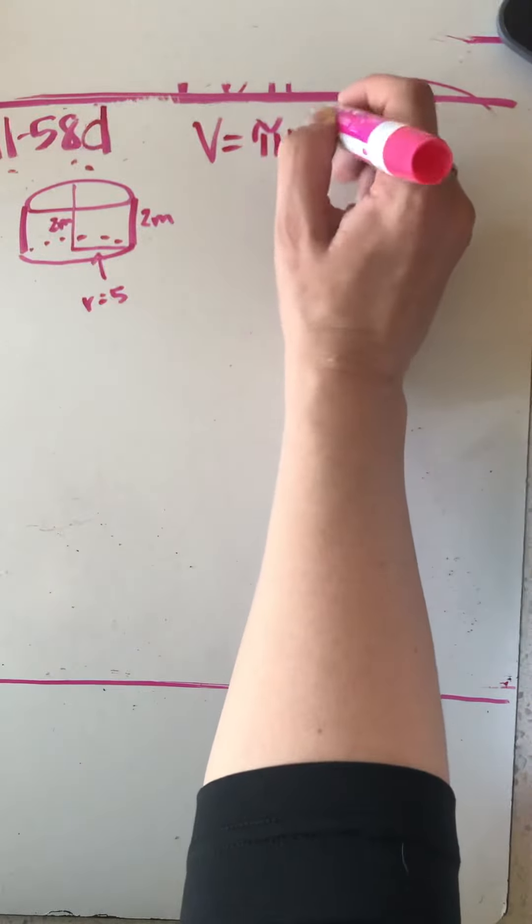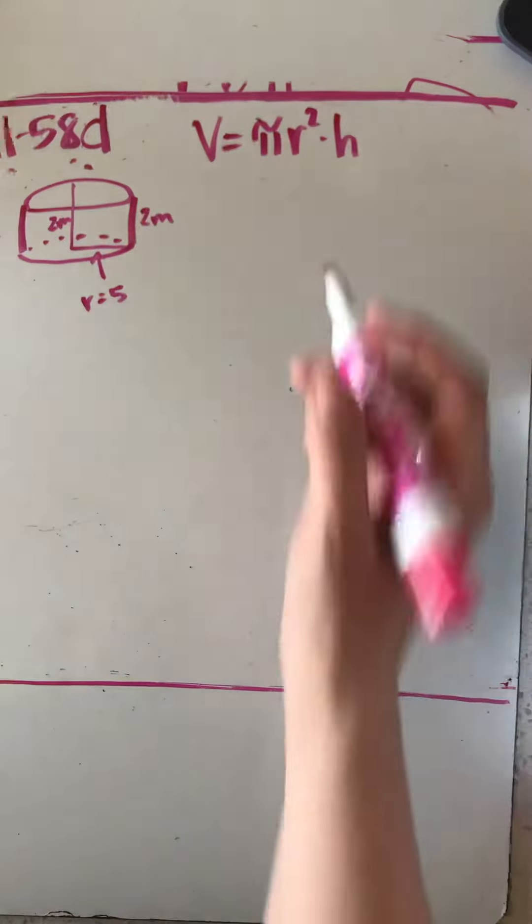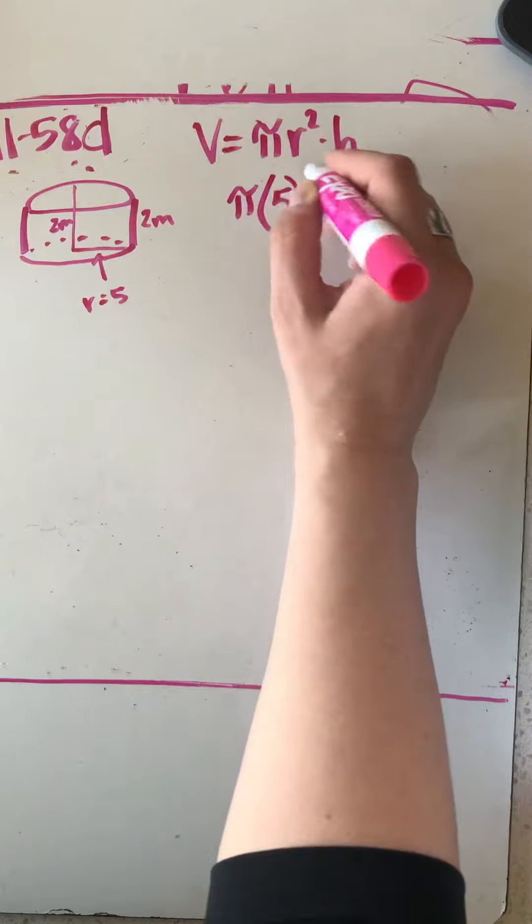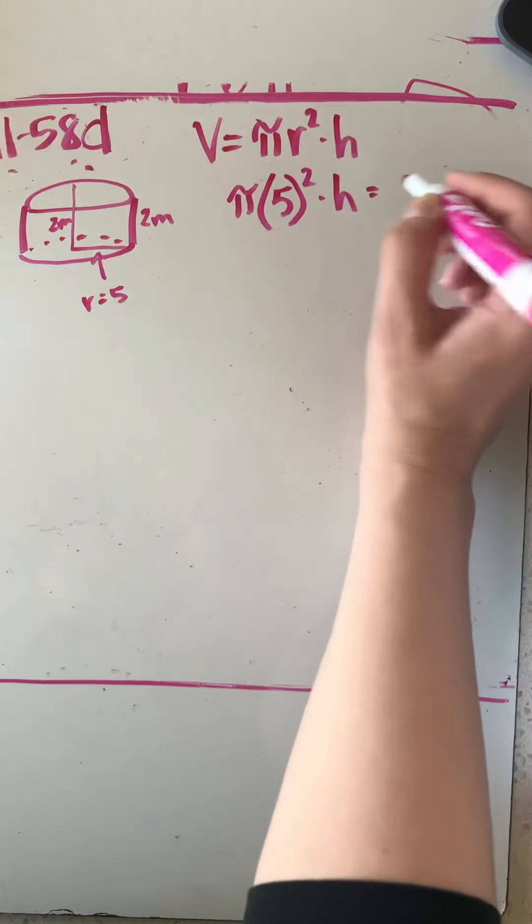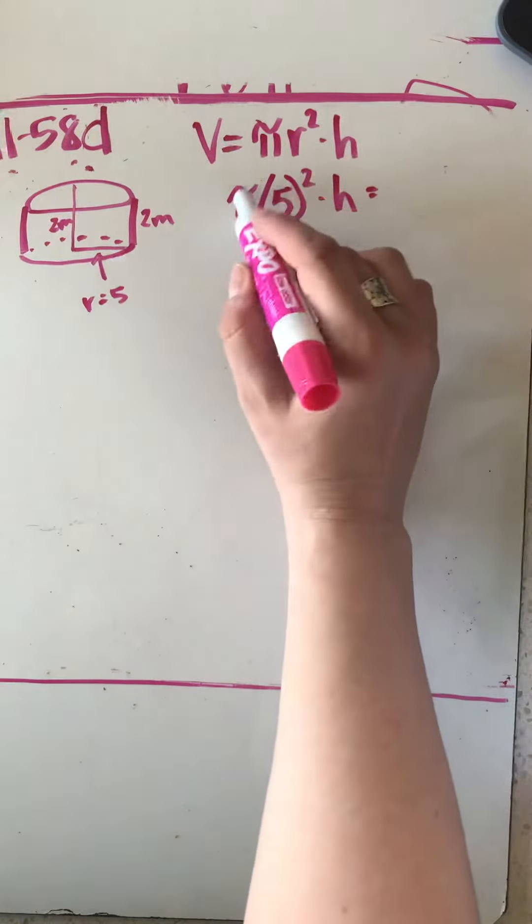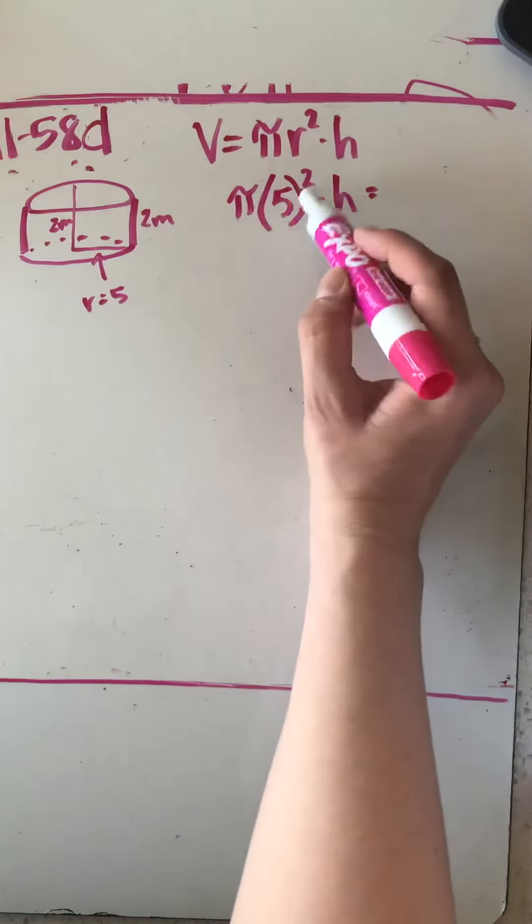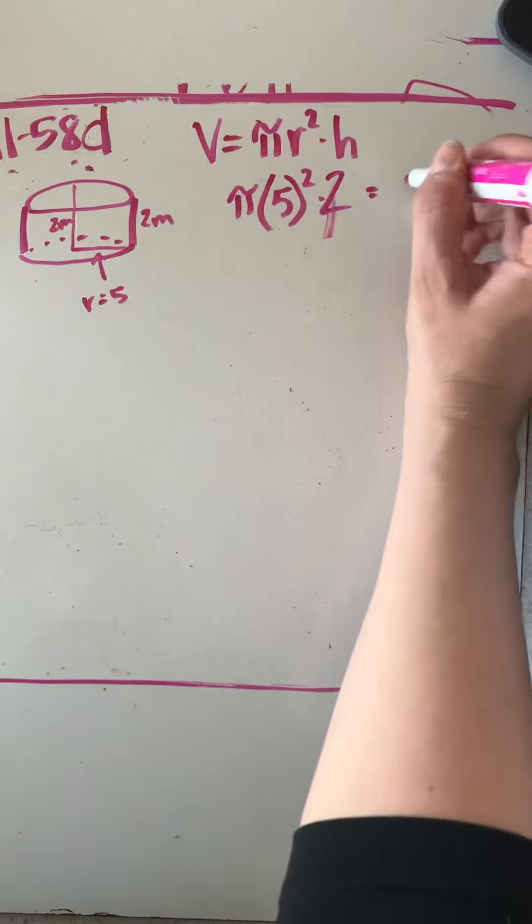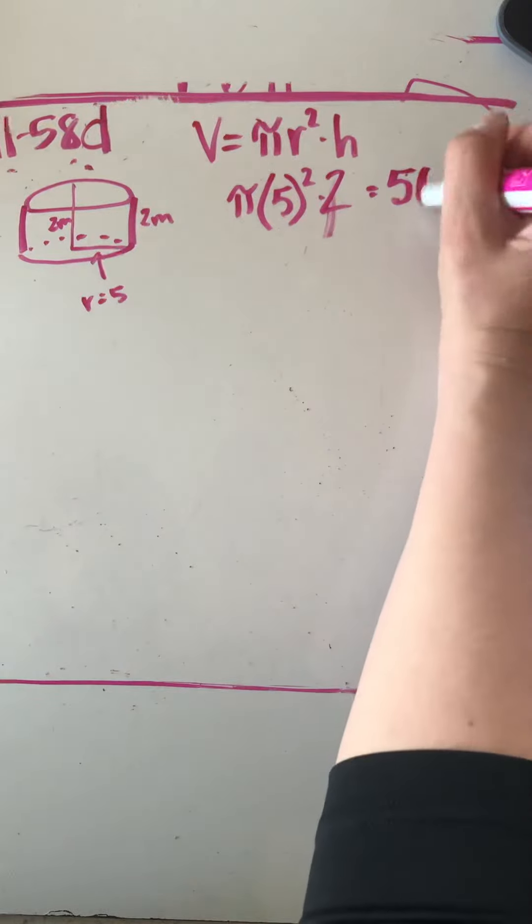Filling in what we know, the radius is 5 and the height is 2. So in terms of π, if I ignore the π and add it on at the end, 25 times 2 is 50, so my volume is 50π.